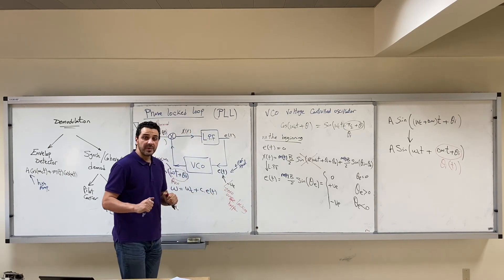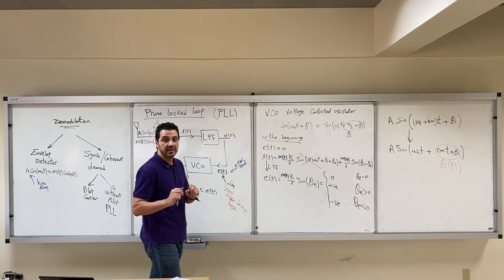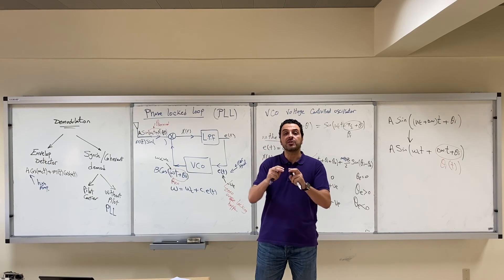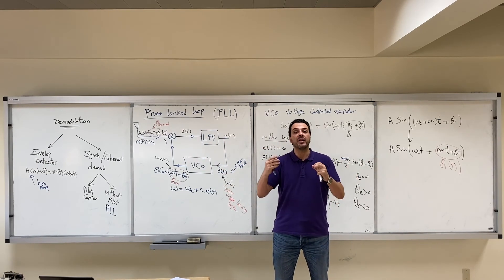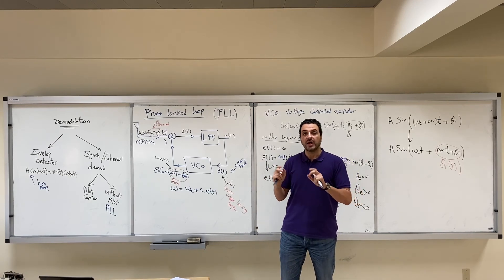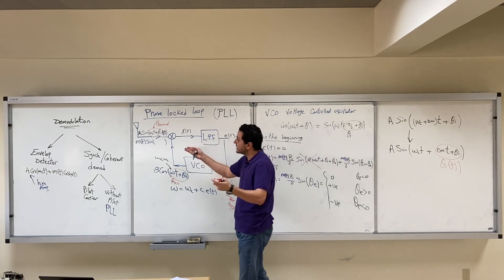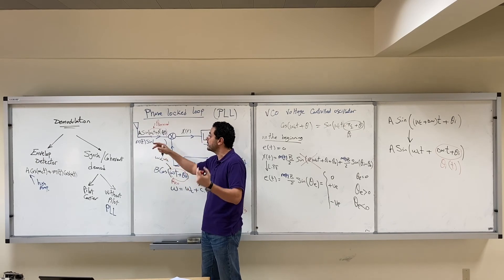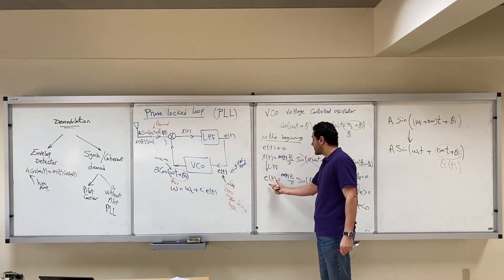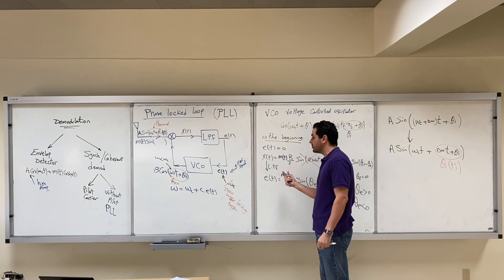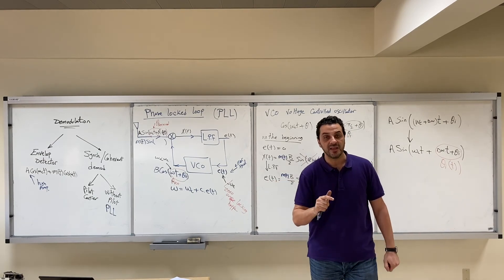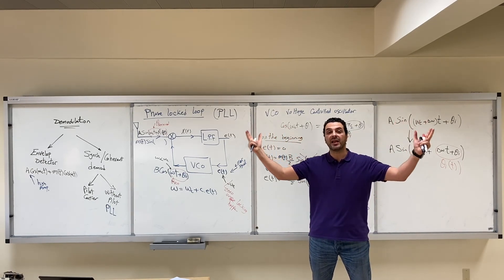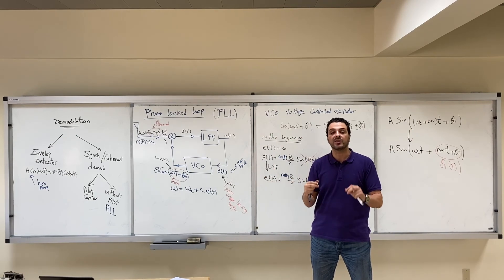That is why we cannot use the phase-locked loop directly at the receiver of DSB-SC. We have to use it within a larger circuit in order to guarantee that it will work properly. Because in our PLL analysis we assumed a constant amplitude A, but in practice we receive M(t) which disturbs the error signal.